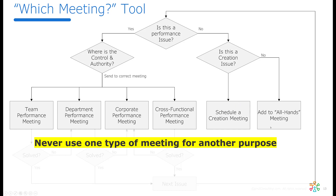Similarly, in the middle of a performance meeting, don't allow someone to give you a lengthy briefing on a topic. Once it goes over about 20 minutes, it's no longer part of a performance meeting — it belongs in an all-hands meeting. Write a video, send out an invitation, hold an all-hands meeting. Never use one type of meeting for another purpose.